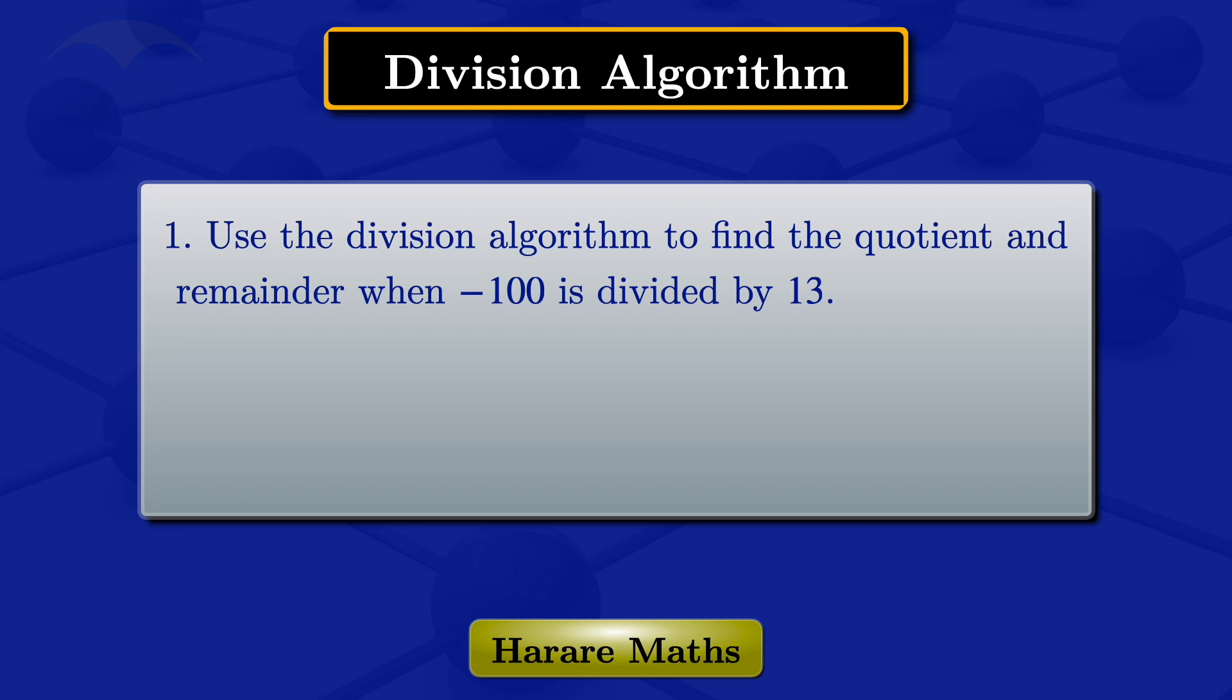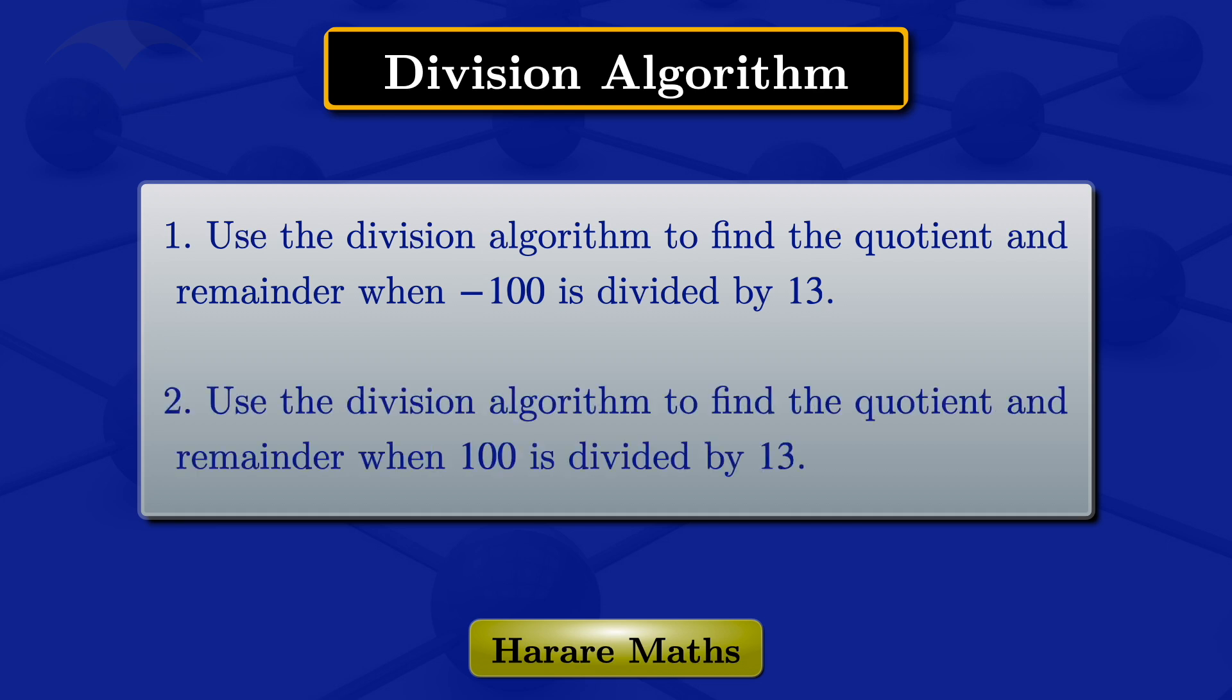In this video, I'm going to use the division algorithm to find the quotient and remainder when minus 100 is divided by 13. For the second question, I'll use the division algorithm to find the quotient and the remainder when 100 is divided by 13.